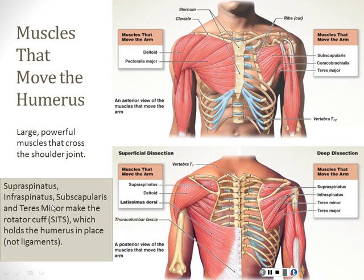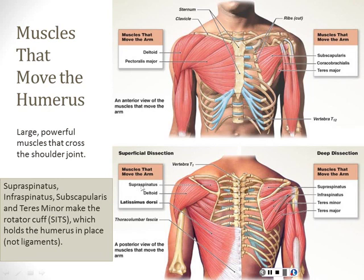The rotator cuff: supraspinatus, infraspinatus, subscapularis, and teres minor. Most of these muscles get their name in relation to the scapula. The supraspinatus is above the spine of the scapula; the infraspinatus is below that spine. The subscapularis is on the anterior surface of the scapula — you can't see it from the outside because the ribs are in the way. And then teres minor sits just underneath the infraspinatus.